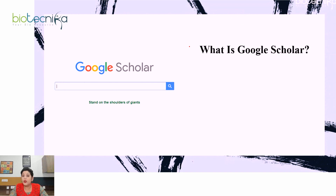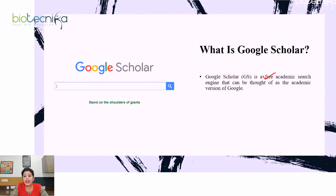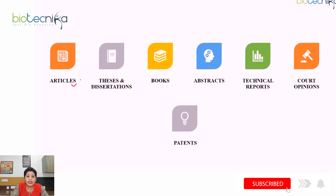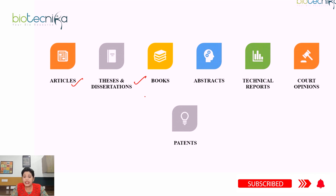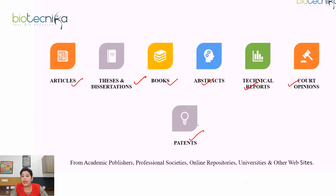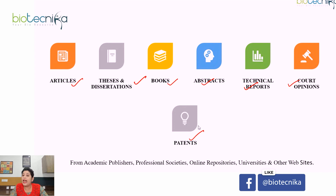Let's first understand what Google Scholar is. Google Scholar is a free academic search engine that can be thought of as the academic version of Google. Using Google Scholar, you can broadly search for scholarly literature at one place — research articles, review articles, conference papers, theses and dissertations, books, abstracts, technical reports, patents from academic publishers, universities, professional societies, online repositories, and other websites.